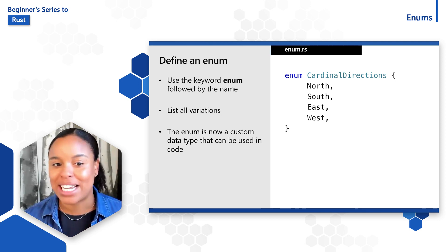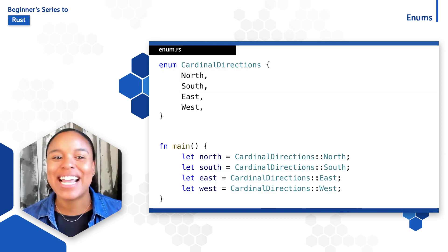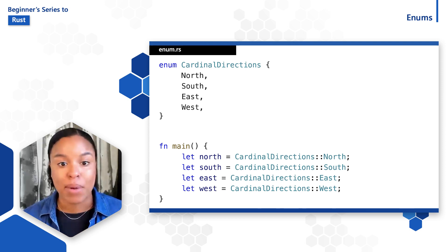Now cardinal directions is a custom data type that we can use in our code. Instances of the variants can be created like this: let north is equal to cardinal directions colon colon north, let south is equal to cardinal directions colon colon south, and so on. The variants of the enum are namespaced under its identifier and a double colon separates them.